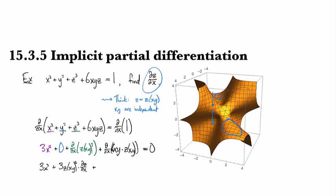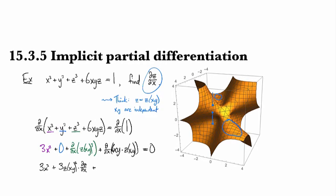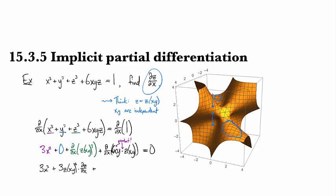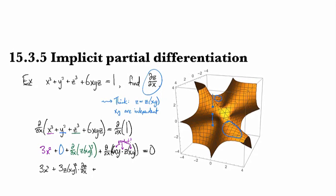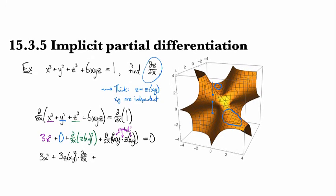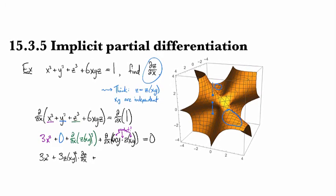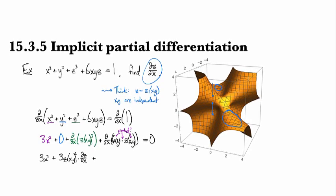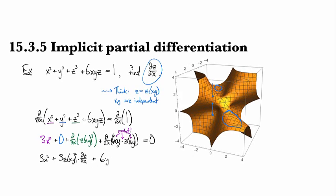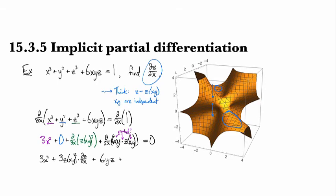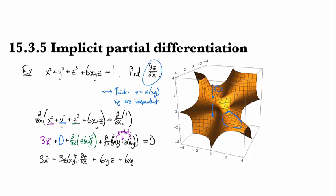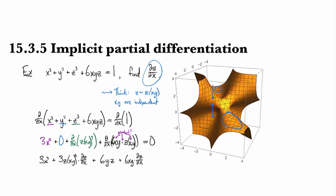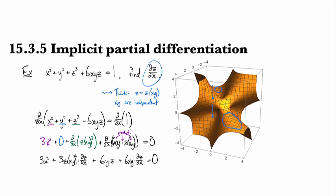Now we've got a product. So we've got x is over here and we've got x is hiding inside z. So we've got to use the product rule over here. So if we do the one that's got the derivative on the 6xy portion, then that will be 6y times z. And then we'll have 6xy times the derivative of z, which is just going to be dz/dx. And then this is all equal to zero.